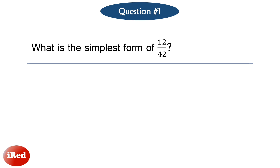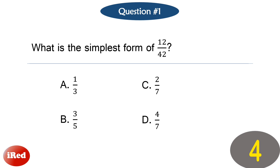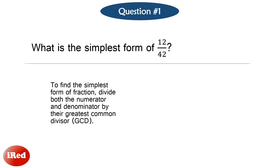Question 1: What is the simplest form of 12 over 42? To find the simplest form of a fraction, we need to divide both the numerator and denominator by the greatest common divisor. In this case, the greatest common divisor of 12 and 42 is 6. Dividing both 12 and 42 by 6 gives us two-sevenths.